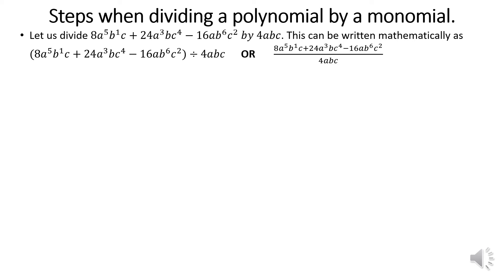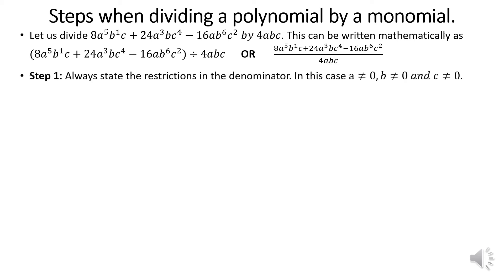Step 1: always state the restrictions, just like in the previous example. The denominator must not equal 0. In this case, if a is 0, the denominator becomes 0; if b is 0, the denominator becomes 0; if c is 0, the denominator becomes 0. So a, b, and c may not be equal to 0. That is the restriction.